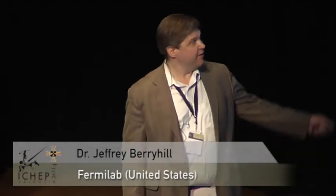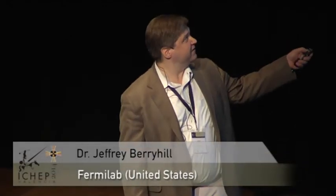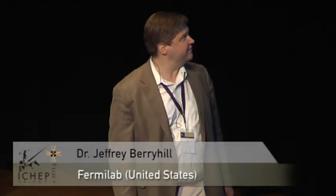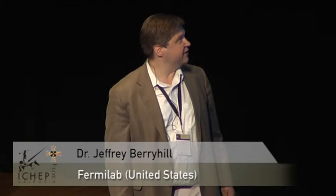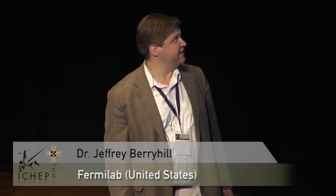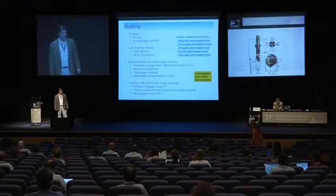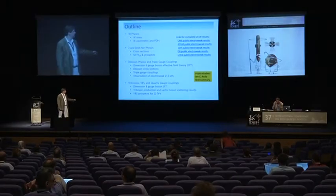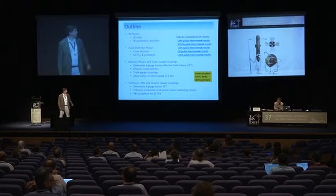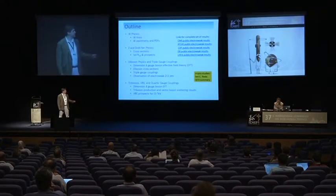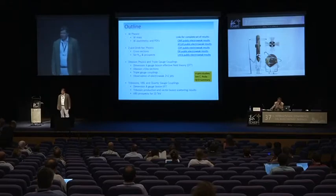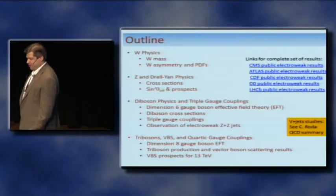The scope of my talk is as follows: we'll cover recent progress in W physics, including the W mass and its production asymmetry; Z and Drell-Yan cross-sections and angular distributions; diboson physics in relation with triple gauge couplings; and lastly, tri-bosons, vector boson scattering, and quartic gauge couplings. One thing I won't be covering is vector boson plus jet studies — that will be part of Chiara's talk in the QCD summary tomorrow.